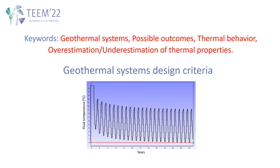These are geothermal systems, possible outcomes, thermal behavior, and overestimation and underestimation of the thermal properties of the ground. First of all, I would like to say that the main design criteria for geothermal systems — in this case low-enthalpy geothermal systems — is to keep under control the temperature from the well fields, as can be seen in the figure of this slide.